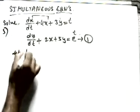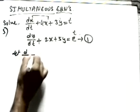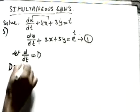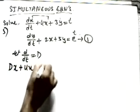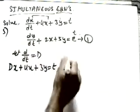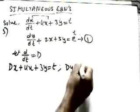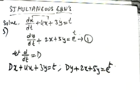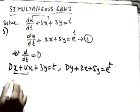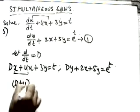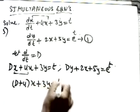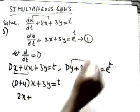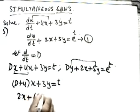We are having differentiation with respect to t, so let D = d/dt (capital D). This will become: Dx + 4x + 3y = t, and the second equation will become: Dy + 2x + 5y = e^t. Taking x common from the first equation gives (D + 4)x + 3y = t.